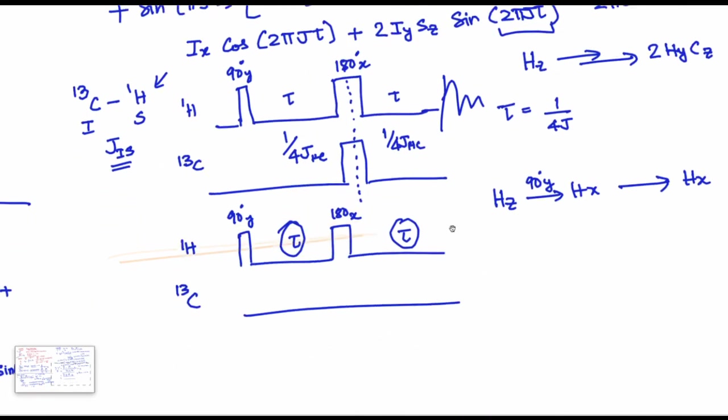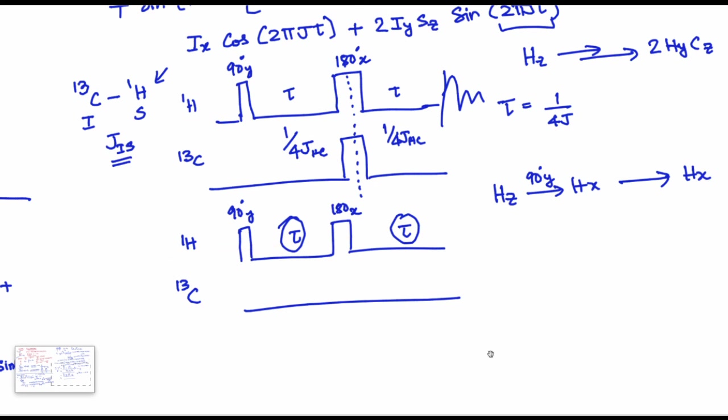This is a very important module for people to understand: based on where you start and what you apply, you can generate whatever you would like in terms of coherences or polarization.